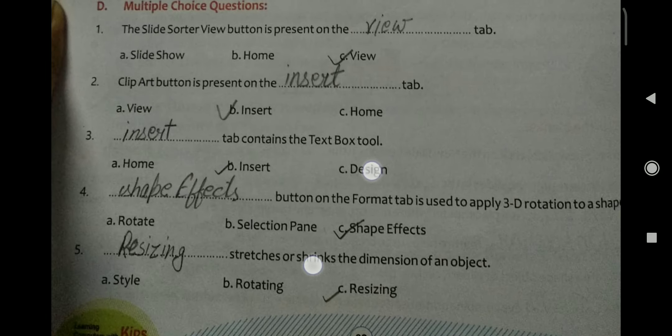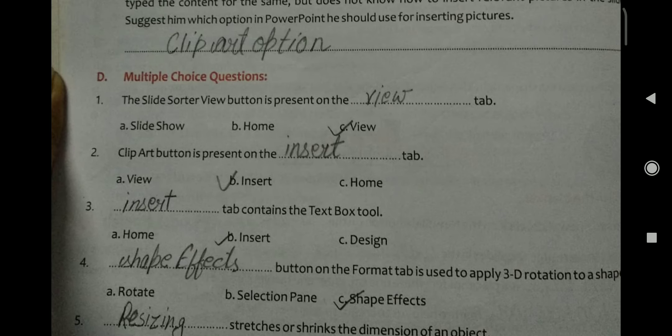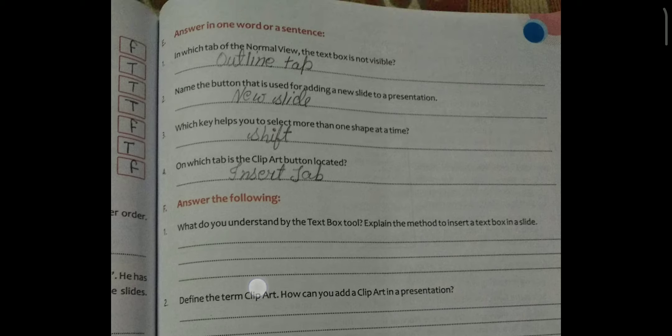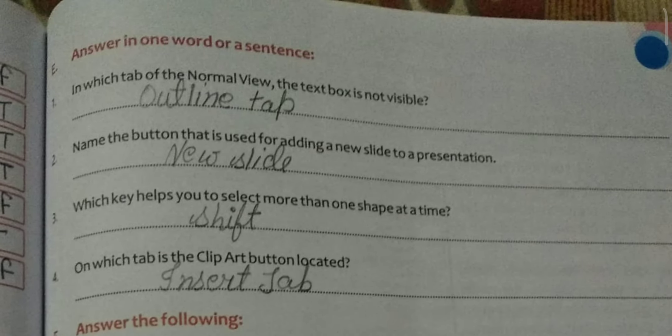Now we will discuss answer in one word. In which tab of the normal view the text box is not visible. It is outline tab.